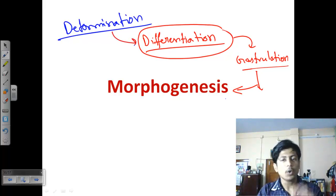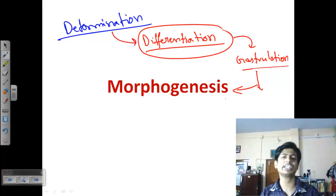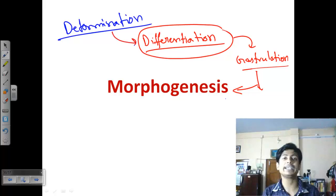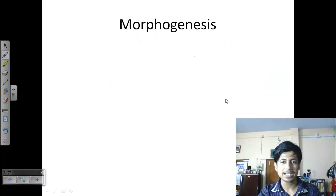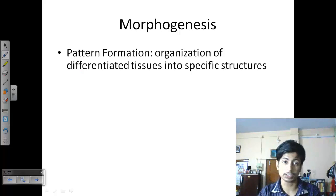Morphogenesis means that once a cell is destined to produce a specific type of mature organ or structure, there will be chemical changes and genetic interactions over time. New gene products will be produced, genetic expression will vary, and it will produce that particular organ. Morphogenesis is extensively studied in Drosophila and contains pattern formation — the organization of differentiated tissues.